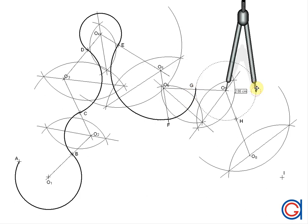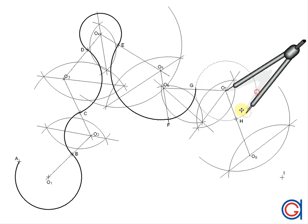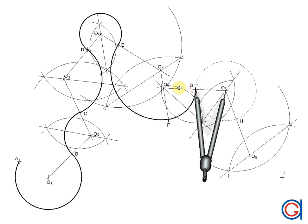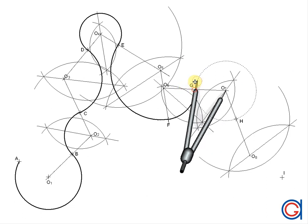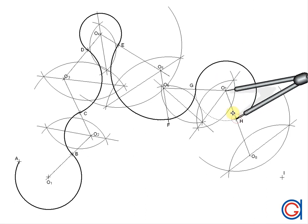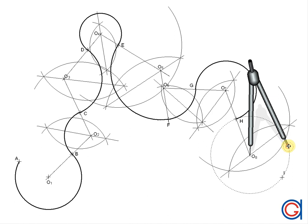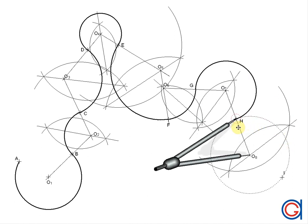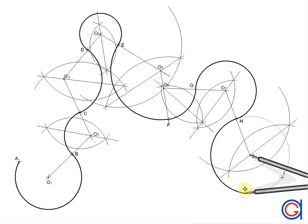Setting our compass on O7 with radius O7G, we draw an arc in a thicker line in the opposite direction, joining G to H. Finally, setting our compass on O8 with radius O8H, we join point H to point I in a thicker line.